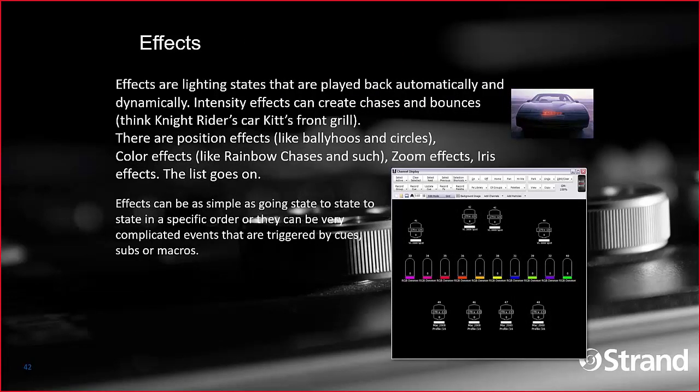Effects are lighting states that are played back automatically and are dynamic. These could be intensity effects like a marquee chase, color effects like LEDs going through a rainbow, or movement effects like moving lights doing circles or ballyhoos. It could be an iris effect or a zoom effect on fixtures. Effects can be as simple as going state to state, or profile-based — such as a sine wave on a moving light's tilt — and can even go all the way up to pixel mapping, dropping images or movies over large arrays of LEDs.